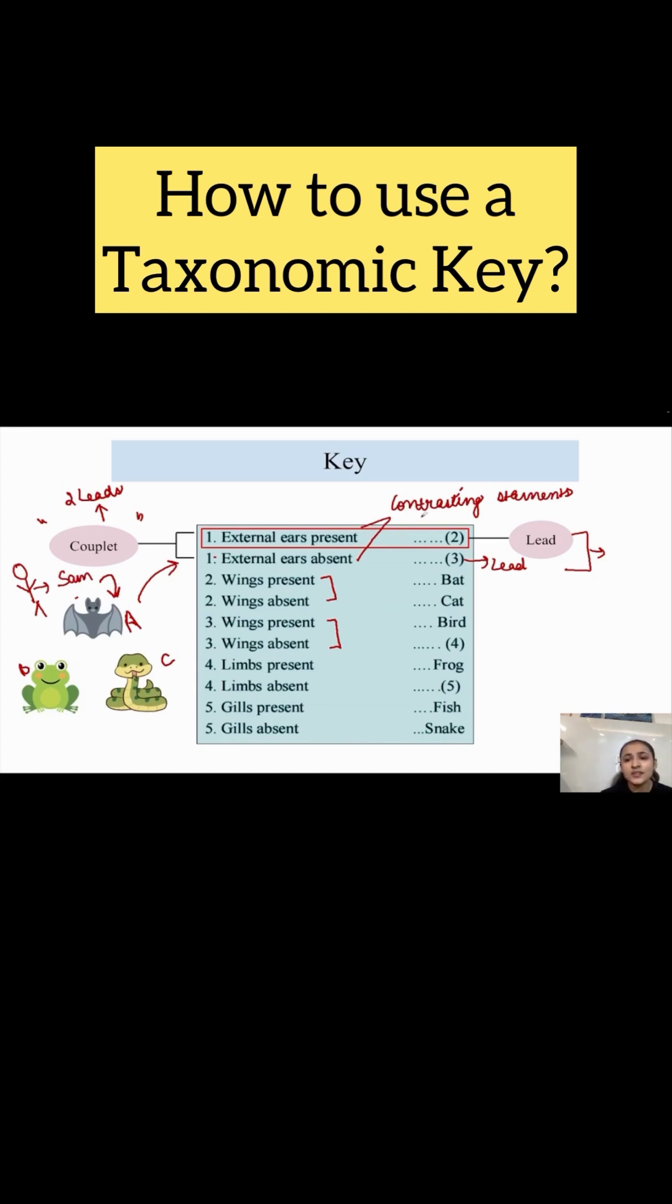Now, the key is suggesting that we go to couplet number 2. In bracket 2 is written, this means that we have to go to the second couplet. We arrive at the second couplet.